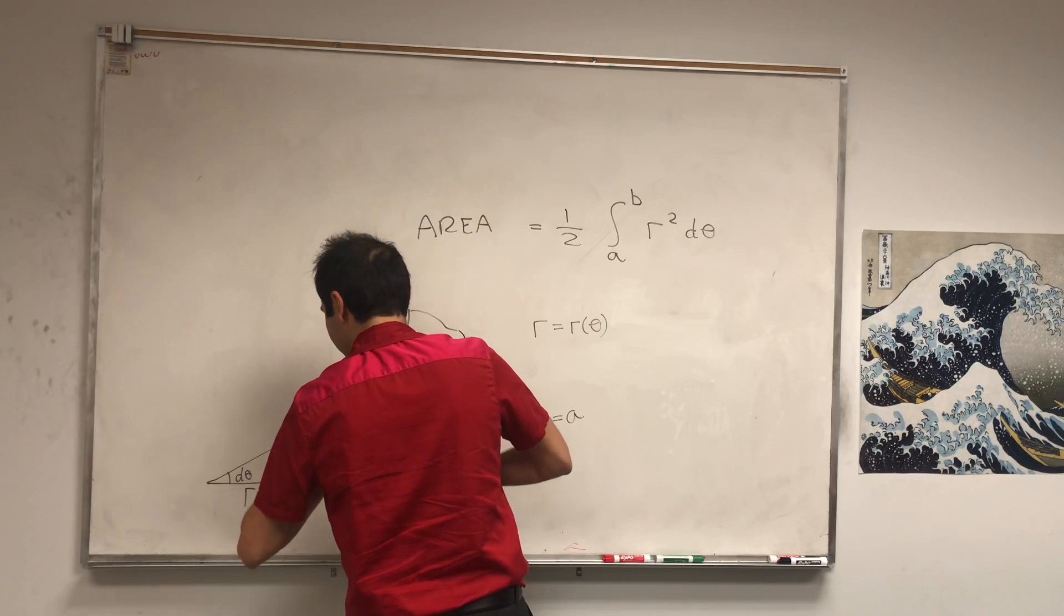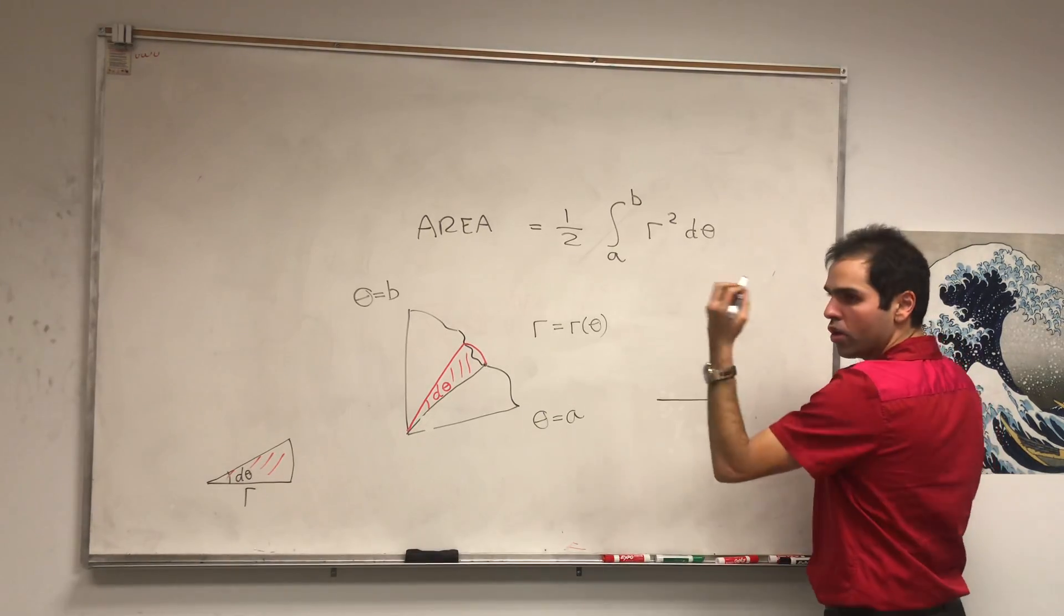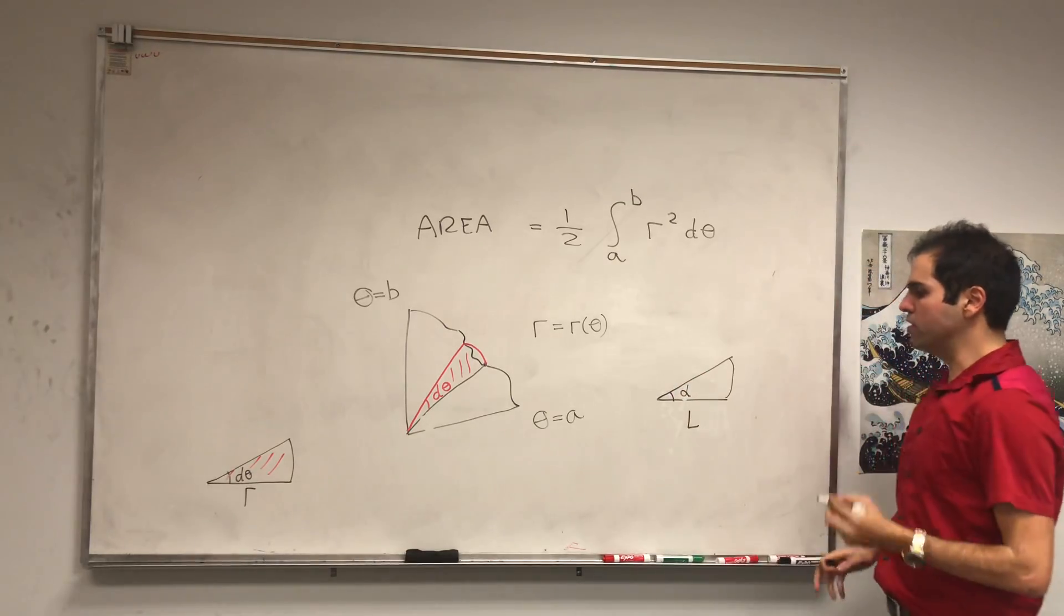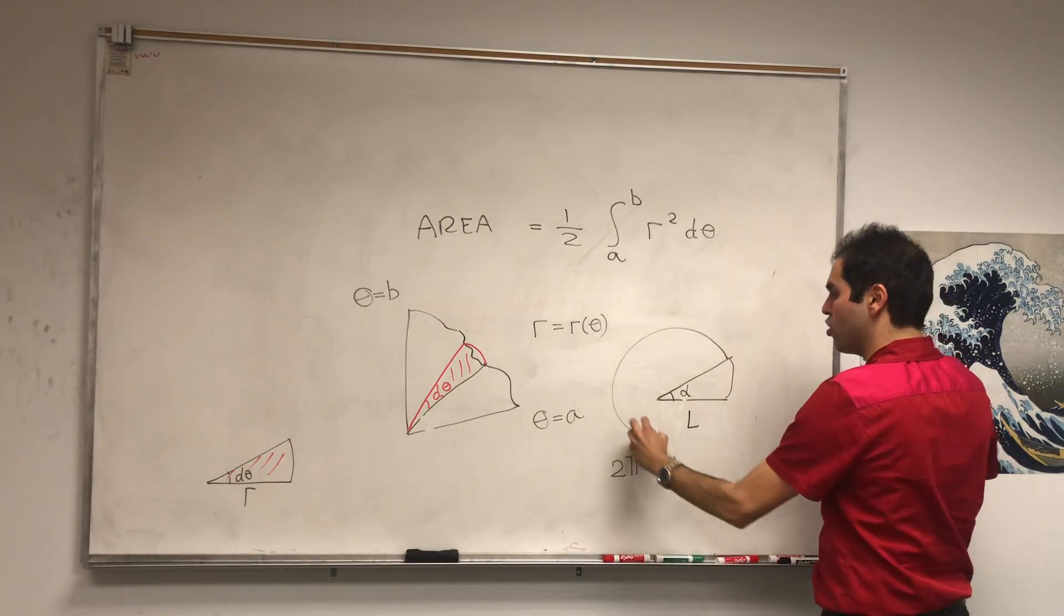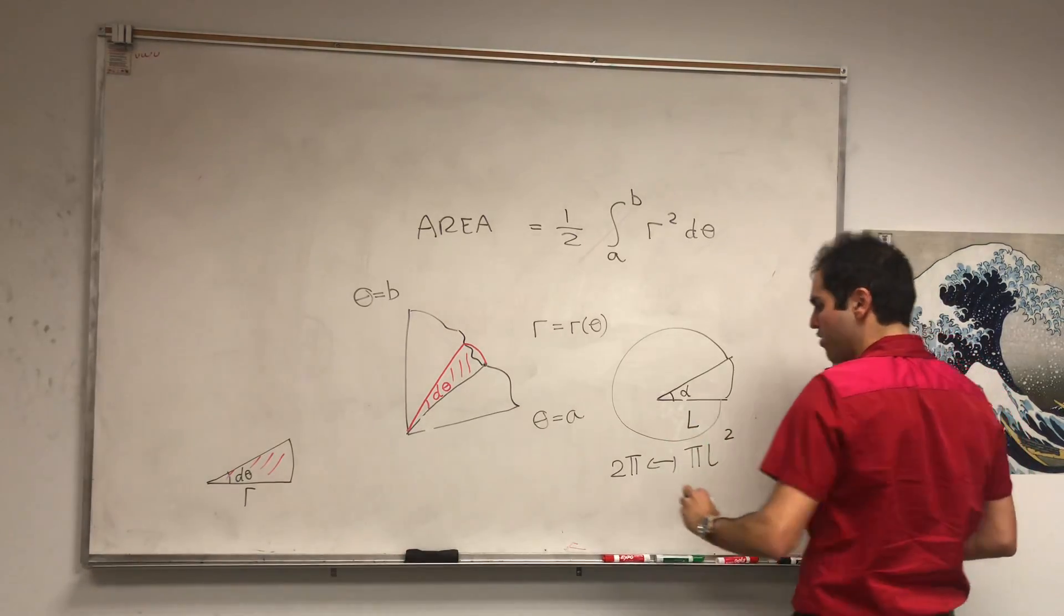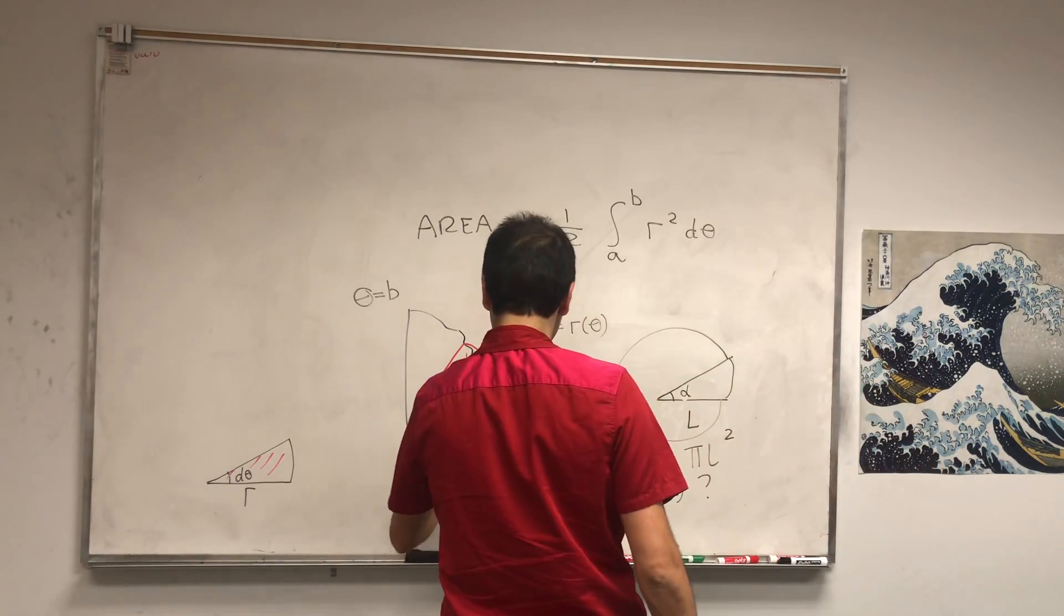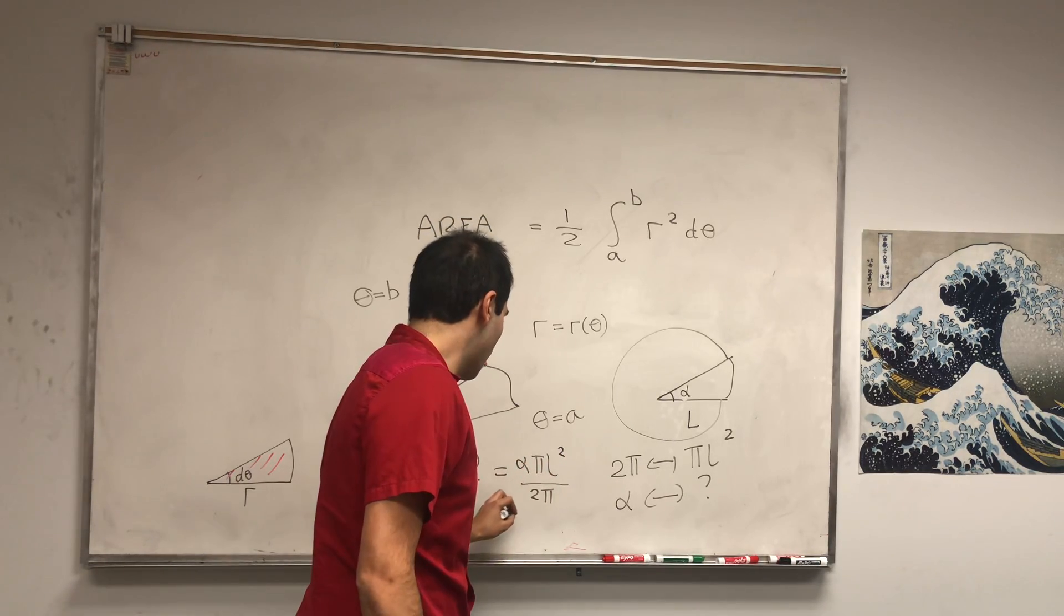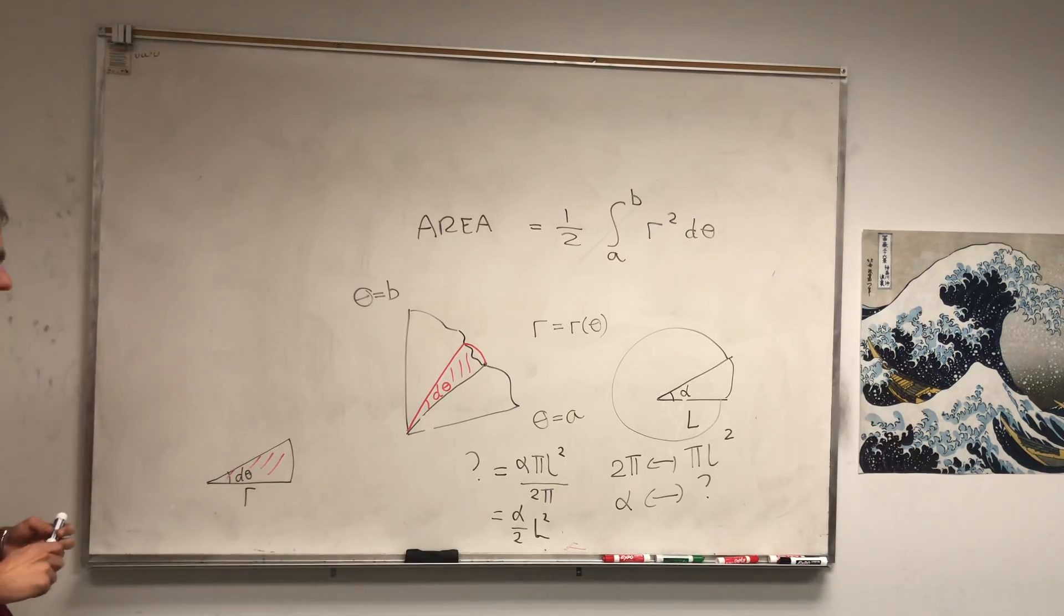Well, look, the radius is r, so r of theta, and the little angle is d theta. So, the area is just, if you want, the area of a sector with radius r and angle d theta. And the question is, what is that area? Well, let's use a little bit of proportionality. So, in general, if you have a circle or a wedge of length L and angle alpha, to find the area, again, of this wedge, you just need to use some proportionality. So, if we have an angle of 2 pi, then we would have a full circle of radius L, so the area would be pi L squared. But now, if we have an angle of alpha, the area is whatever question mark is, and we can just solve for the question mark. That becomes alpha pi L squared over 2 pi, and therefore, alpha over 2 L squared.